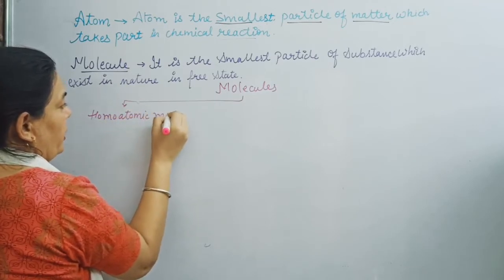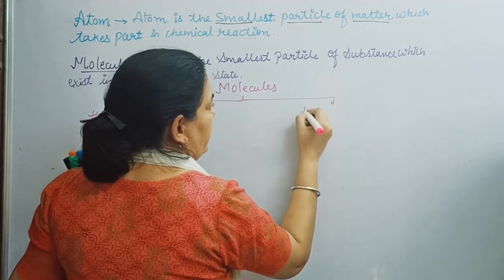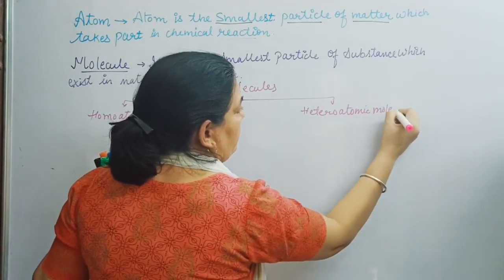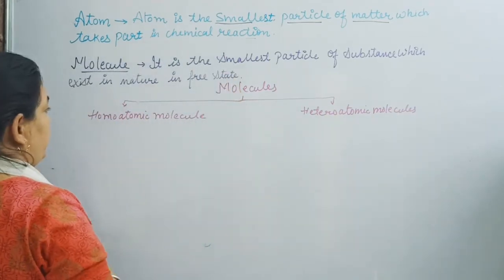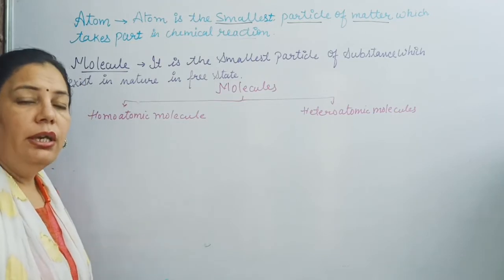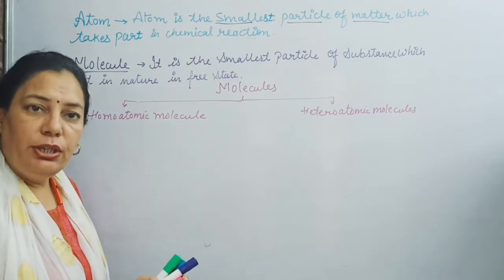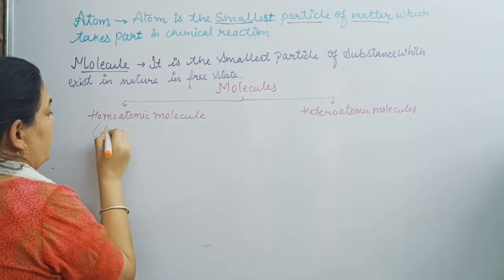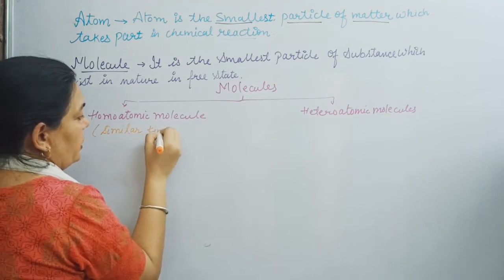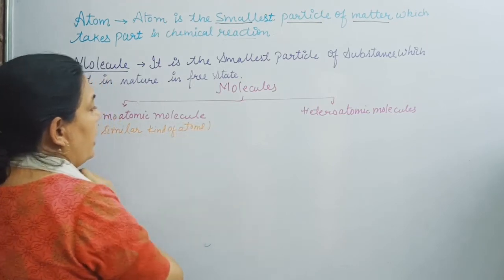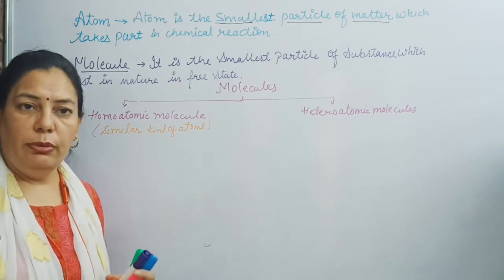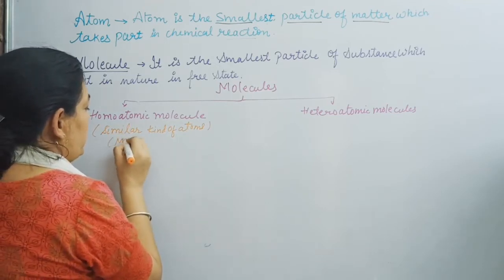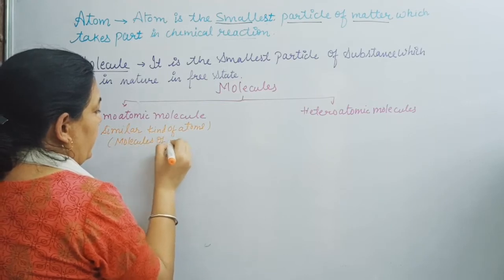The first category is homoatomic molecules, and the second is heteroatomic molecules. As the name itself explains, 'homo' means similar. Homoatomic molecules consist of similar kinds of atoms — only one element, and all atoms are of the same element. These homoatomic molecules are also known as molecules of elements.